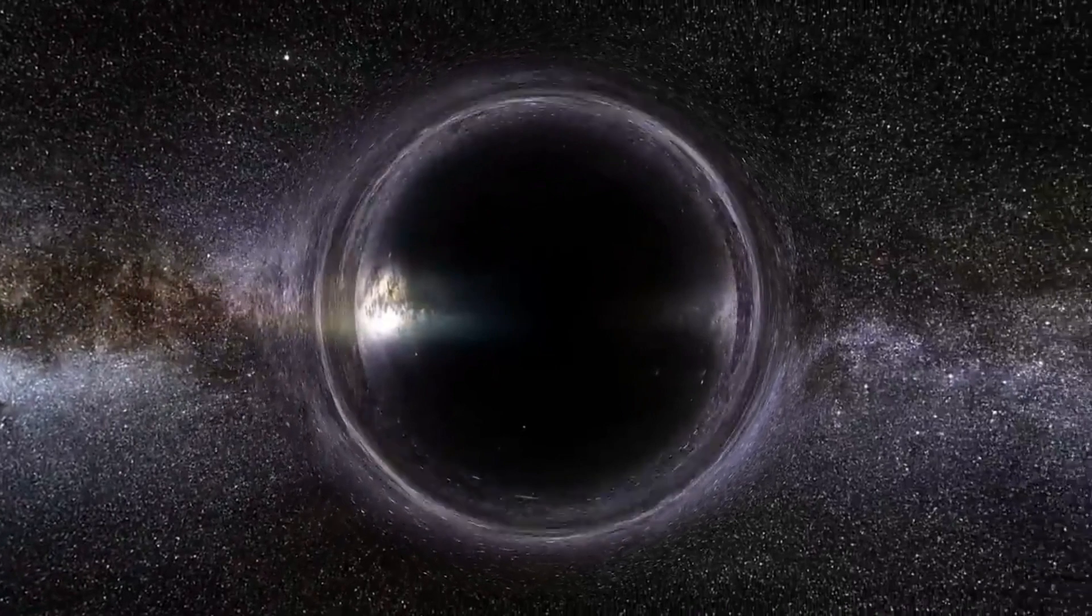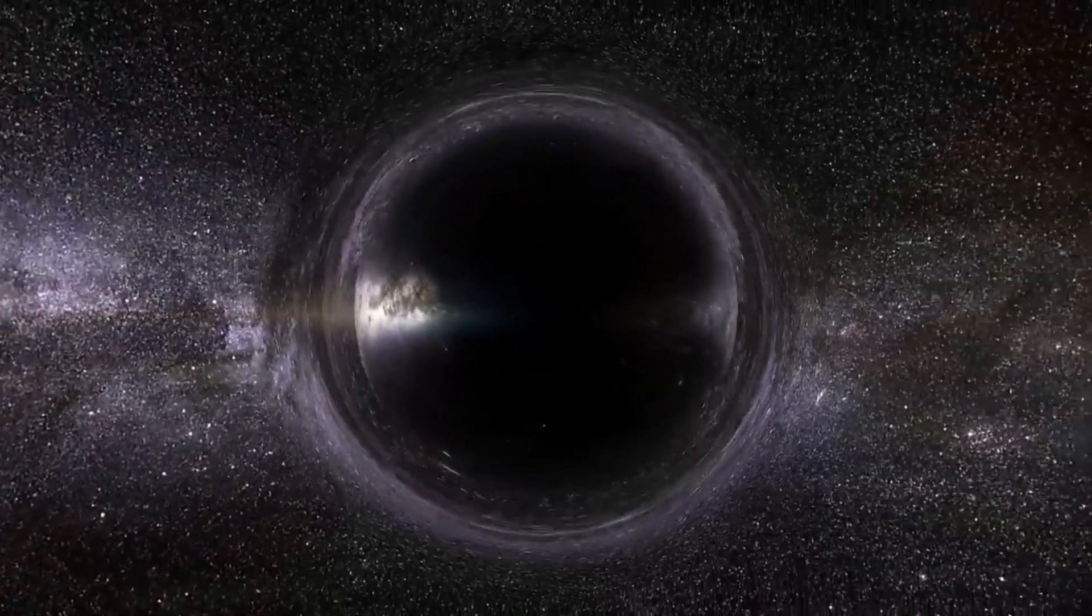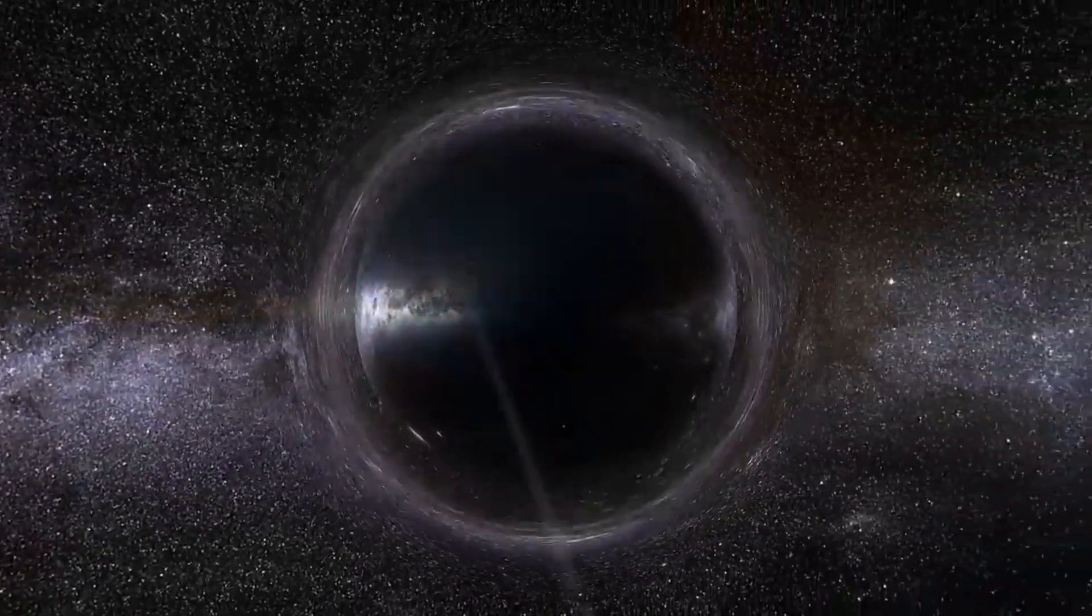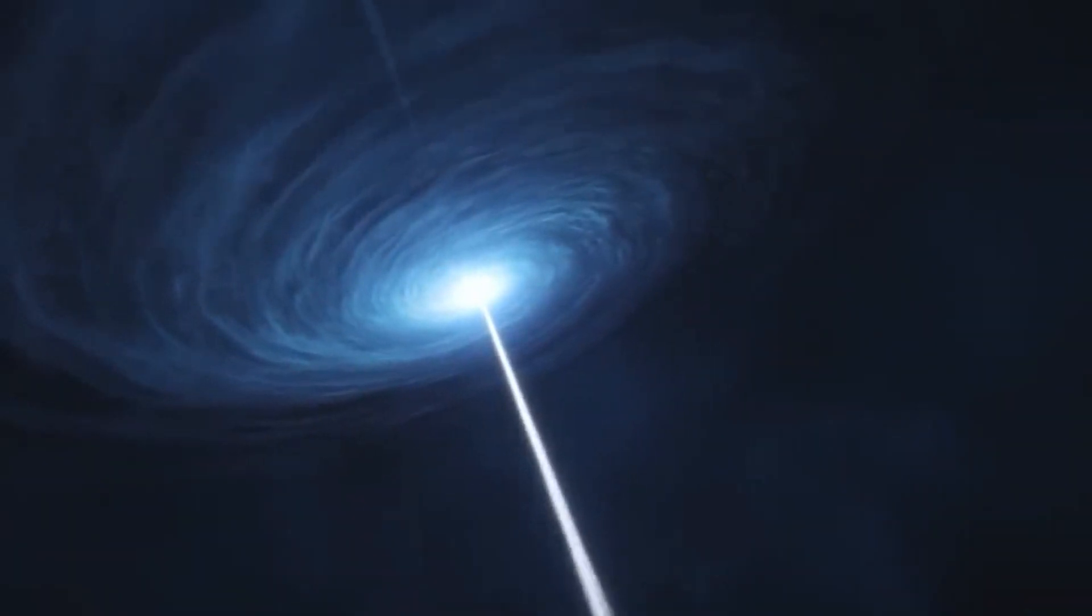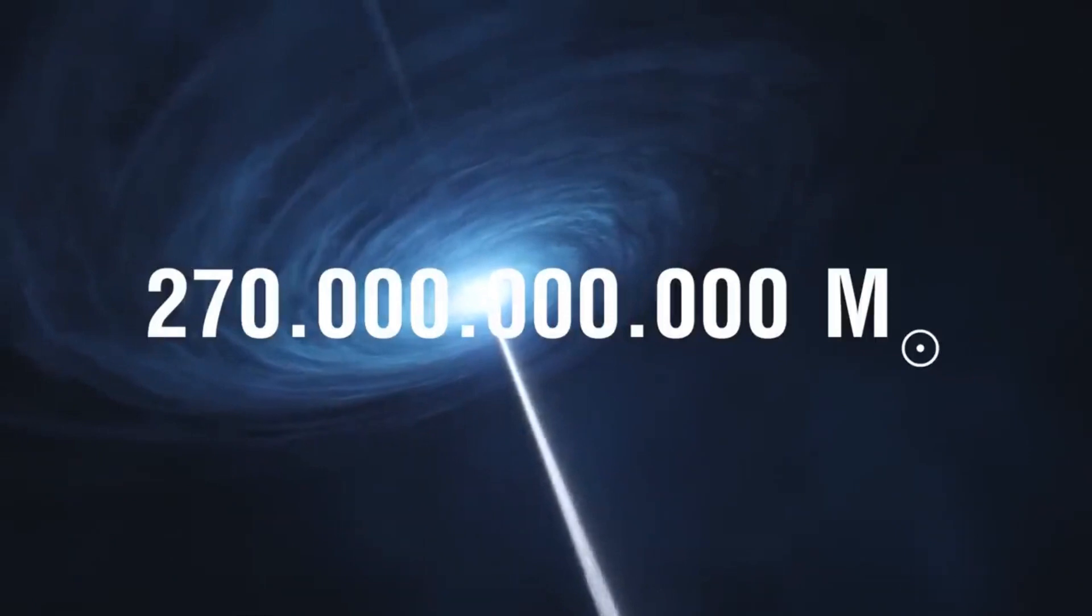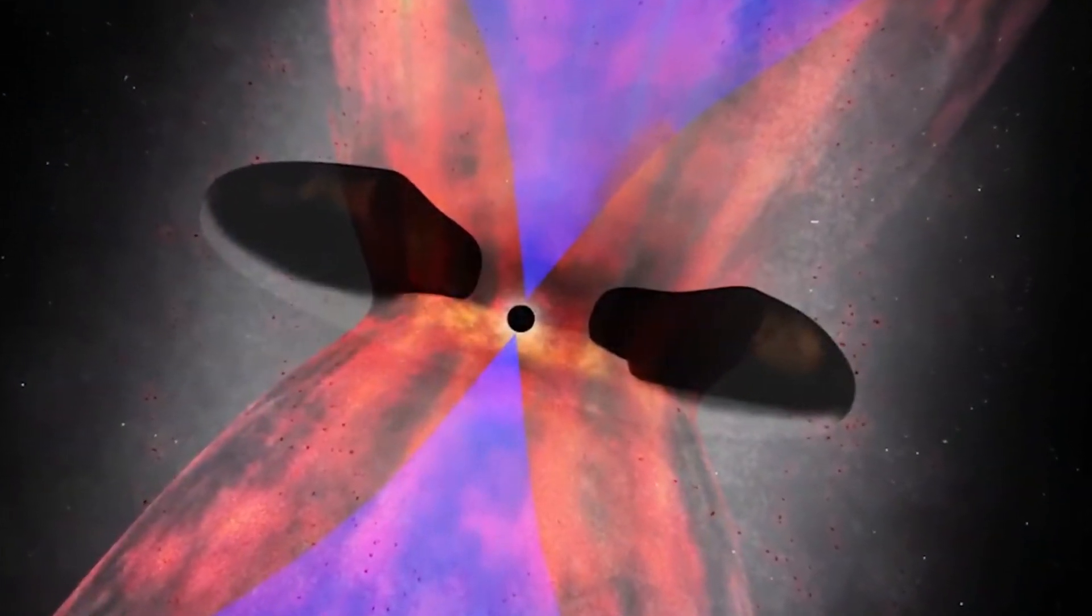Once a black hole reaches this size, it can no longer significantly increase in size by consuming accreted matter. This implies that there will be no shining quasars or active galactic nuclei with masses exceeding 270 billion solar masses. However,